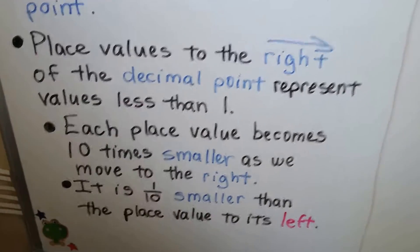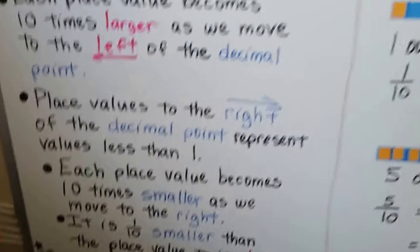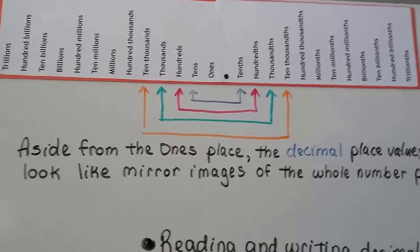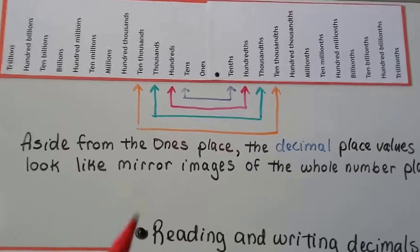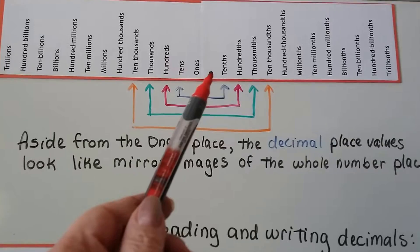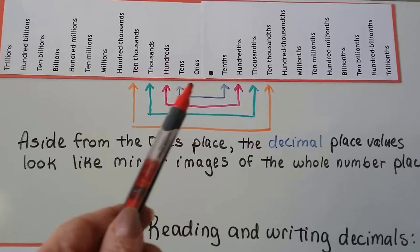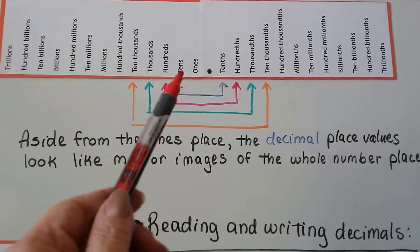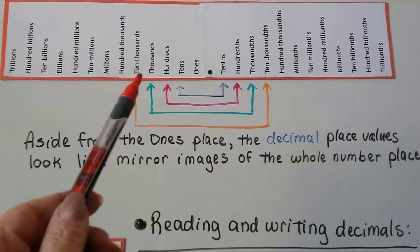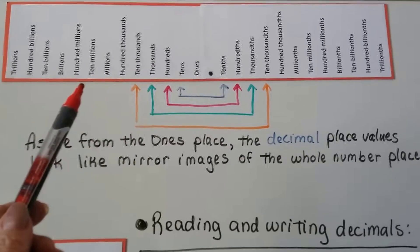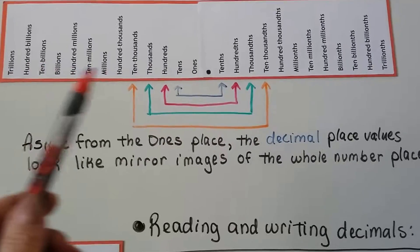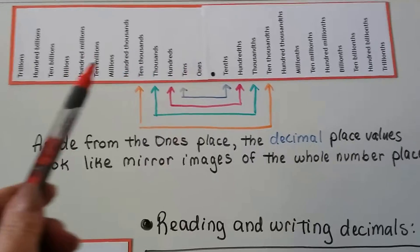I know this can be confusing, but stick with me and we'll figure this out. Take a look at this place value chart. We've got our decimal point right in the center. Next to it, to the left, is the ones, tens, hundreds, thousands, ten thousands — like we're used to. We've been dealing with these ever since we started the GED math playlist.